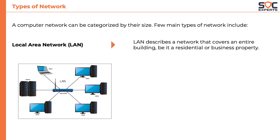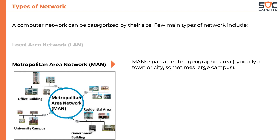The second type of network is Metropolitan Area Network, or MAN, which spans an entire geographical area, typically a town or a city. MANs are usually used to link two office buildings in a city, or connecting two buildings in a large education campus.